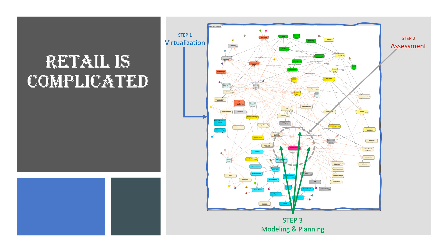This model starts with the virtualization of the enterprise. One tailors this model to their unique business and can then focus their efforts around what they are trying to accomplish. In the assessment area, you can identify the applications and their information related to what you are trying to accomplish. You can then model and plan for your upgrades to that particular area.